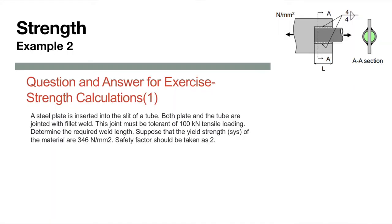In example number two, we have a steel plate which has been slit open, and in this slit a tube is inserted. Both the plate and the tube are joined with fillet weld — the pipe crosses into the plate and all four corners are fillet welded. This joint must be tolerant of 100 kilonewton inside load. We need to determine the required minimum effective weld length.